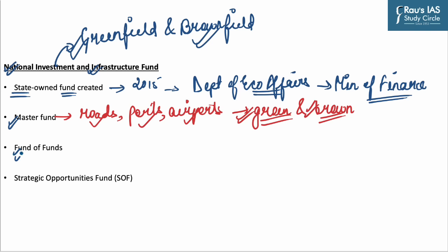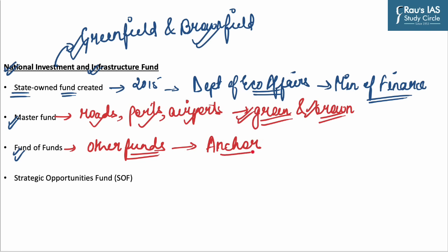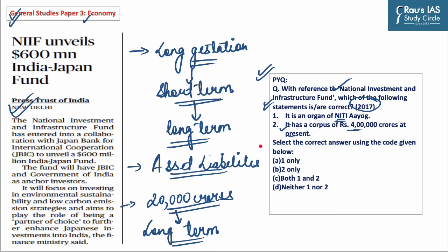The second component is fund of funds, which invests in other funds managed by renowned fund managers with a good track record in funding successful infrastructure projects, acting as an anchor investor to other private funds. The third component is the strategic opportunities fund, which targets investment in companies belonging to sectors with good growth potential. From the above discussion it becomes clear that option D is the correct answer.